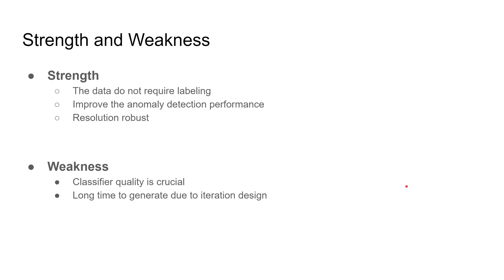The strengths and weaknesses: the most important strength is the data does not require labeling, which is very important because pixel-wise labeling for medical images requires a lot of work and requires people with professional knowledge, like doctors, who are pretty busy and hard to find. The second strength is improved anomaly detection performance — it achieves state-of-the-art results, as shown in the experimental results.